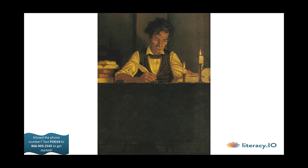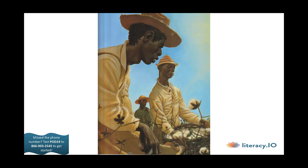"Resolve to be honest at all events, and if you cannot be an honest lawyer, resolve to be honest without being a lawyer. Choose some other occupation." Nearly four million black men, women, and children were enslaved in southern states. Lincoln thought slavery a great evil. If he became a United States Senator, more people would hear him speak out against it. In speech after speech, he reminded people that slavery did not fit with the ideals of the Declaration of Independence. He lost the election, but again his words got much attention.